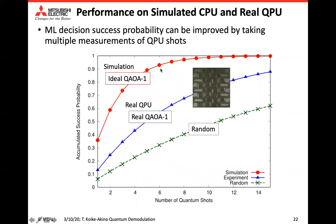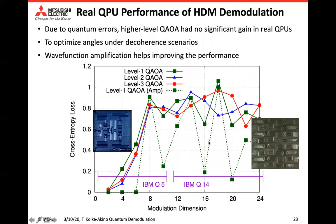Let's see the simulation results and real quantum chip results. By using multiple quantum measurements, we can achieve 100% success rate for ML decisions. However, real quantum chips have imperfections, so there are some performance degradations — but results are still better than random demodulation. This shows real quantum chip performance using IBM Q5 and IBM Q14 for different dimensions. Unfortunately, levels 2 and 3 had no particular gain on real quantum chips, but we can achieve small cross-entropy for some low dimensionality. And if we use wave function amplification, we can achieve better performance.